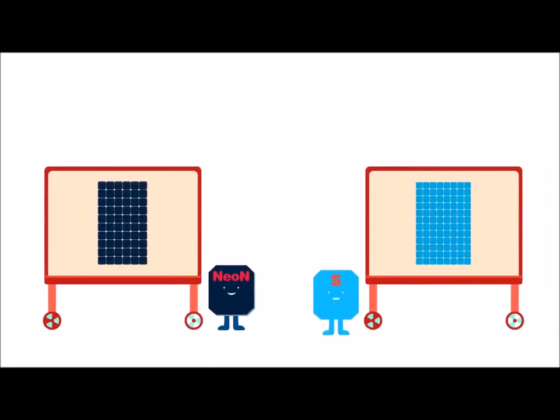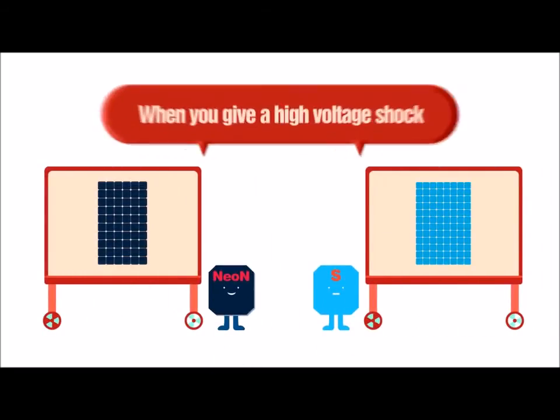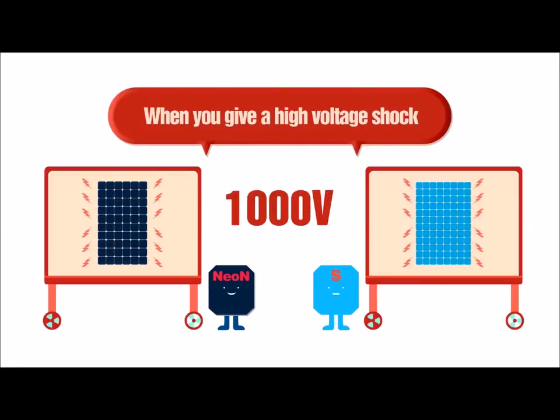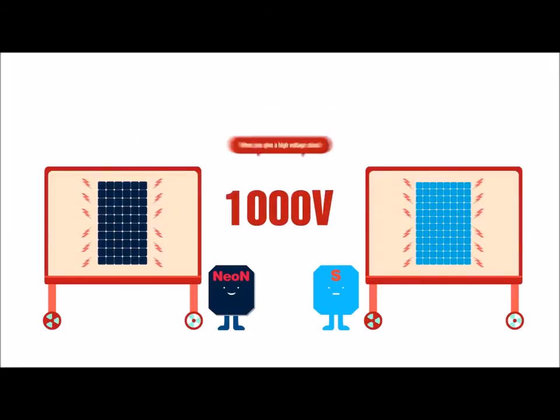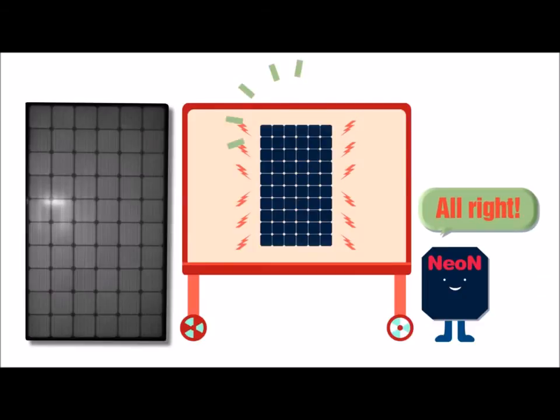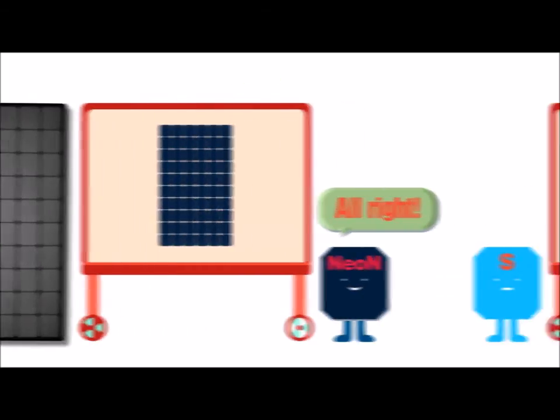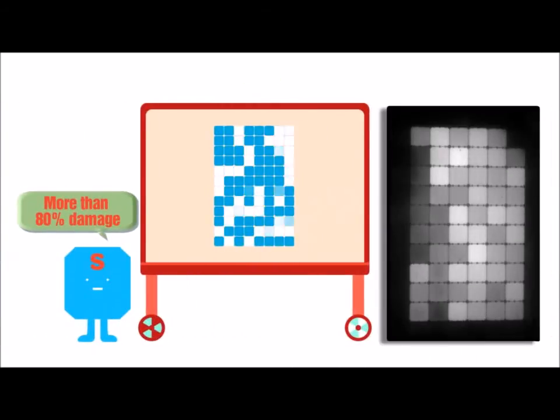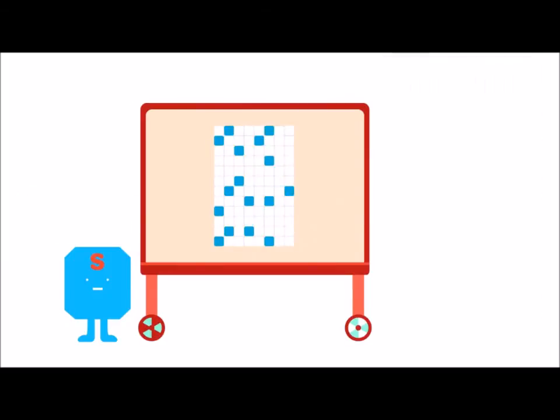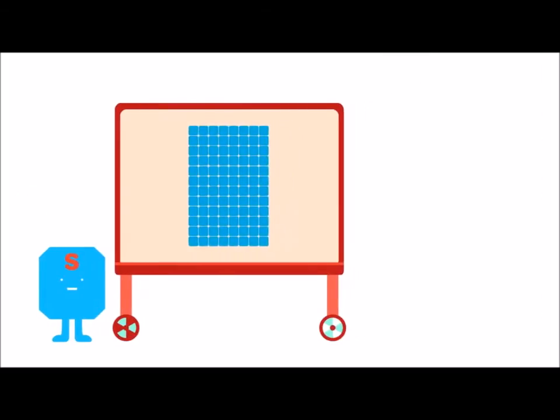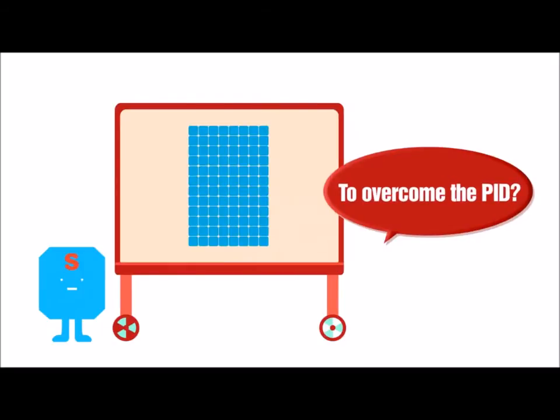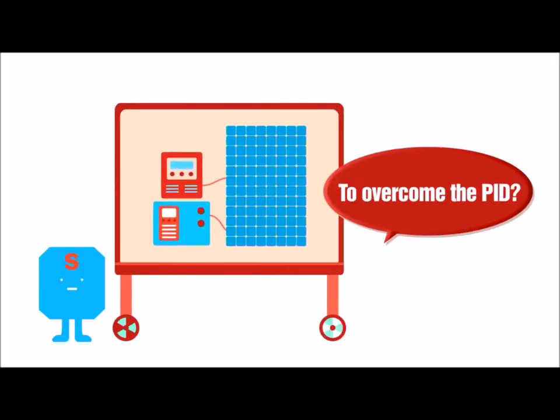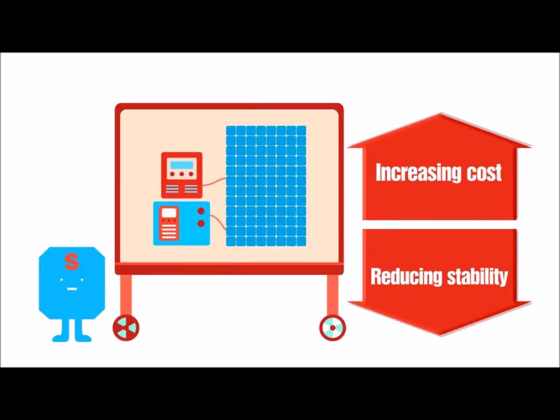Let's look at the EL test photograph. The LG Mono X Neon module on the left has all of its cells retained under the same condition and equal amount of shock, whereas company S's module on the right has more than 80% of its cells damaged. Here, company S would have to use a transformer inverter to overcome PID, increasing cost and reducing its stability.